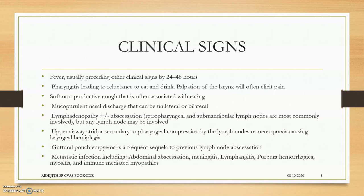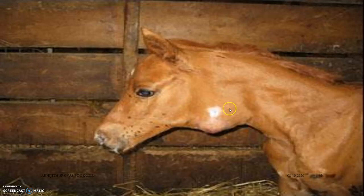Clinical signs include fever, pharyngitis, and soft non-productive cough, usually when eating. Mucopurulent nasal discharge can be unilateral or bilateral, but mostly thick yellowish creamy discharge will be coming from both nostrils. Lymphadenopathy with abscess formation will be present, and upper airways will be rigid with secondary compression. This image shows a very large abscess in a foal in the pharyngeal lymph nodes.